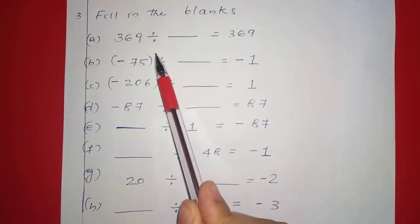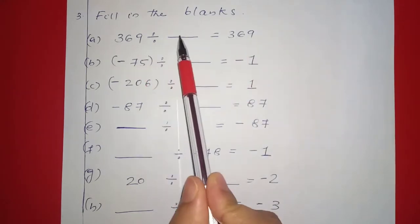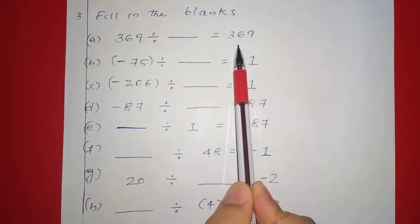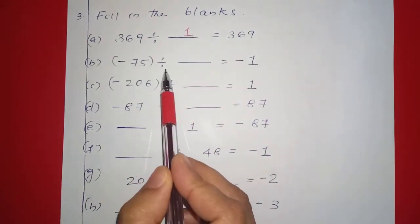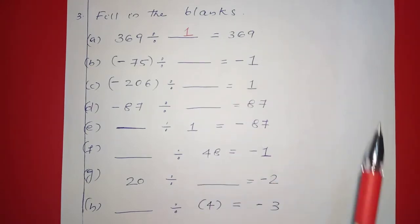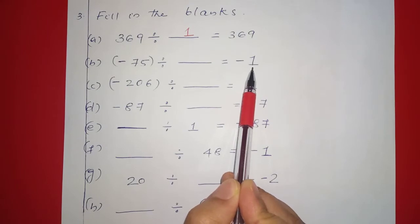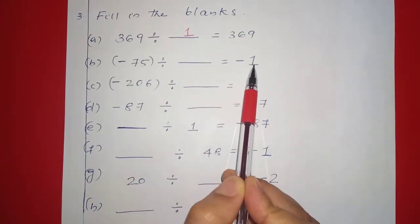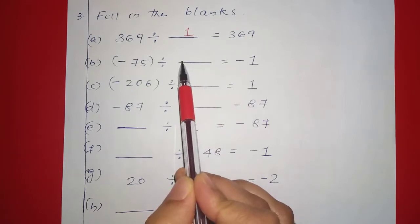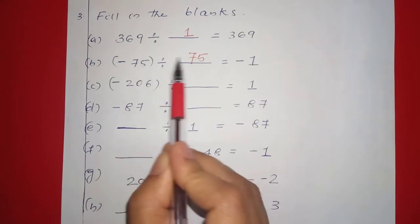Filling in the blanks. First one: 369 division dash is equal to 369. The answer is 1, because any number divided by 1 equals itself. Next: negative 75 division dash is equal to negative 1. We need negative 75 divided by 75 to get negative 1, so the answer is 75.